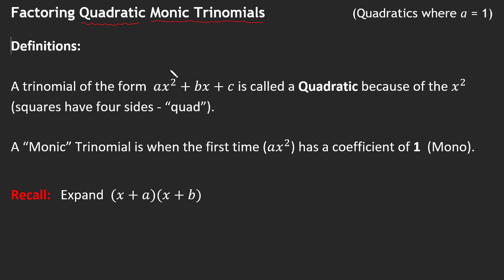So a trinomial, which means an item that has three terms, an algebraic expression with three terms. If it is in this form where we have an x² we call that a quadratic and that is because of the x² portion. Don't forget that squares have four sides and so that's where the word quad comes from because of this idea that all four sides being the same length, the area of that shape if we were to have side lengths of x, the area of that shape would be x² and so that x² being the area is where we get the term quadratic.